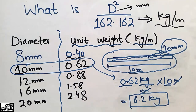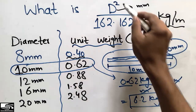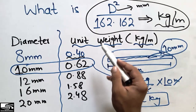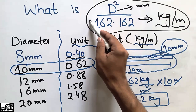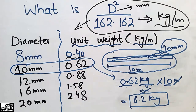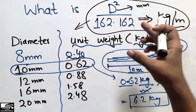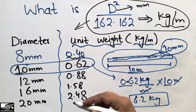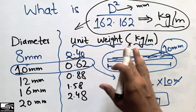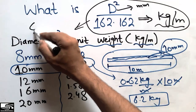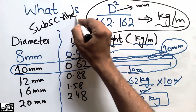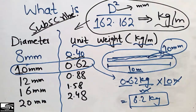This was today's topic about the formula D squared divided by 162.162, which is mostly used in quantity estimation. You should remember this formula and how to use it to find the weight of a steel bar. Don't forget to subscribe to our channel for daily Seven Engineering videos — thank you for watching.